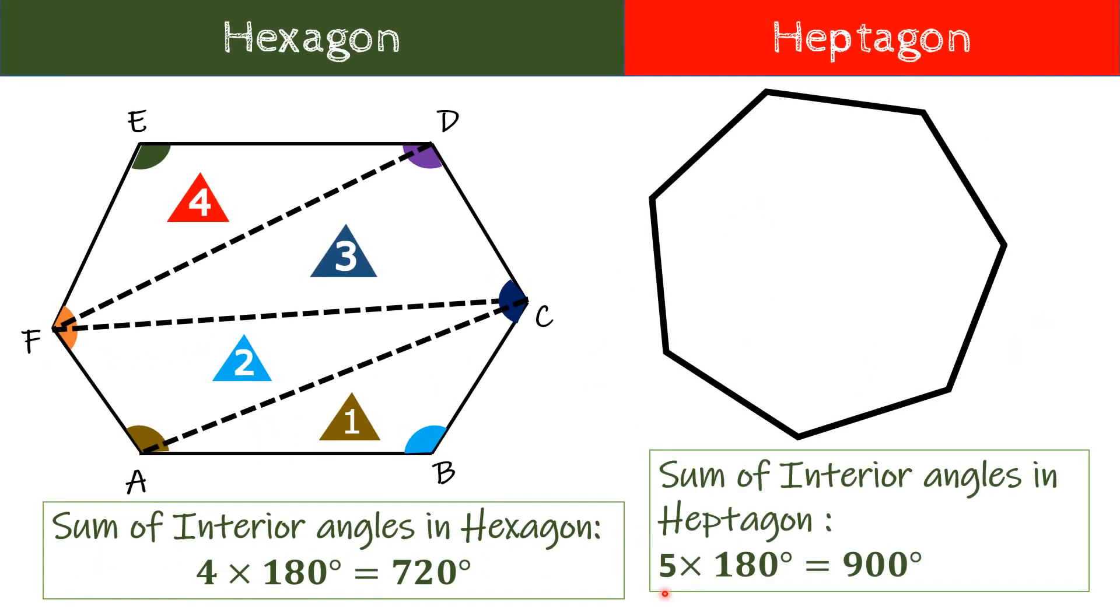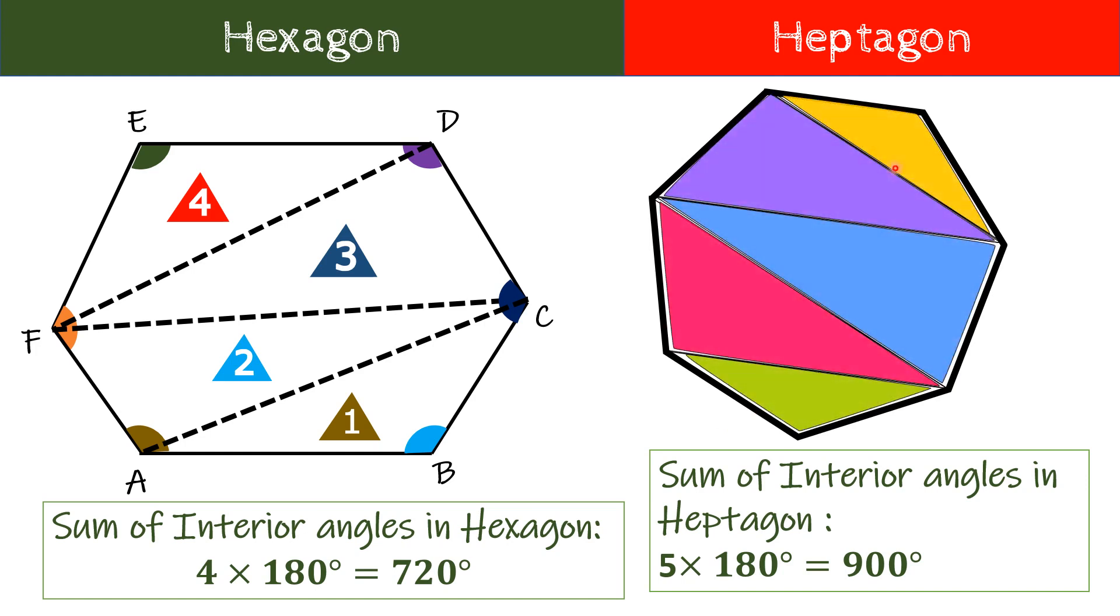Similarly, we can do this with seven-sided heptagon. By joining vertices as shown here we get 1, 2, 3, 4 and 5 non-overlapping triangles jo हमारे heptagon को completely cover कर रहा है. So, we can find total interior angles as 5 multiplied by 180 degree which is equal to 900 degrees. The sum of all the interior angles in a heptagon will be equal to 900 degrees.